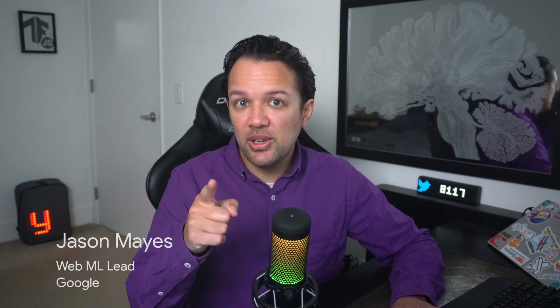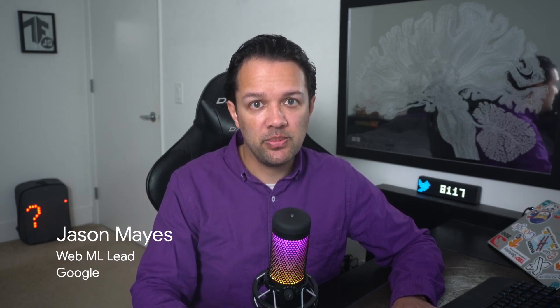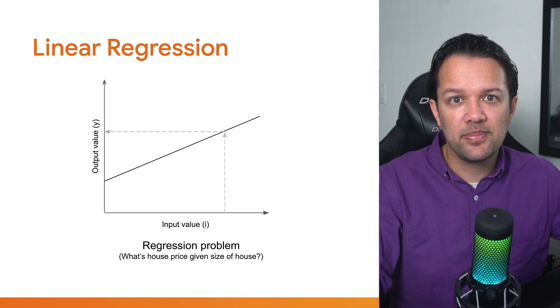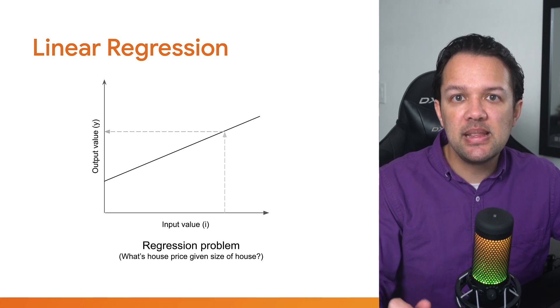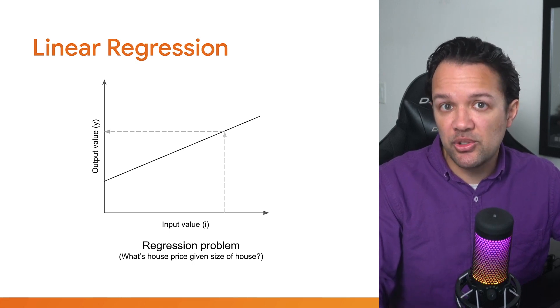In the last section, you learned the key parts that made up a neuron. In this section, you'll see how they learned to represent the training data that's passed to them. First, let's revisit linear regression that you learned about in Chapter 2.